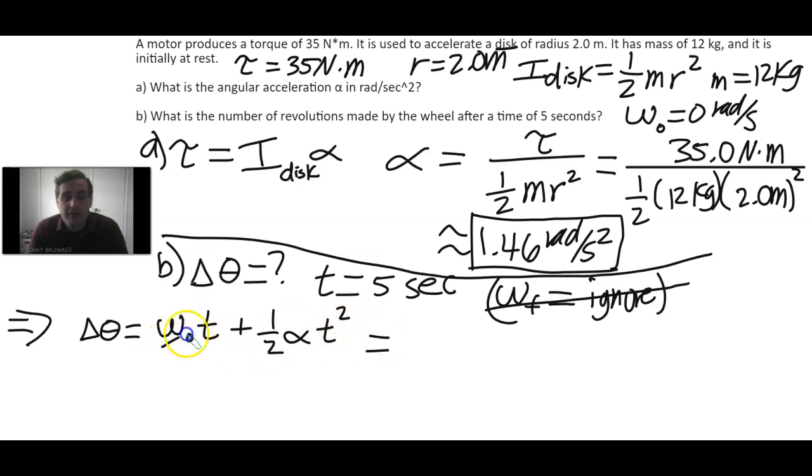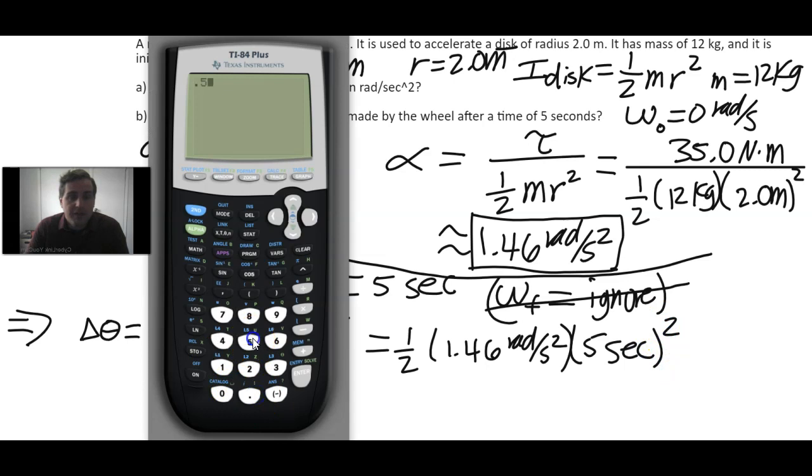Since the initial angular velocity was zero, this entire term is zero. So it's just ½ times α, which is 1.46 radians per second squared, times the time of 5 seconds squared. So 0.5 times 1.46 times 5 squared gives us 18.25. Let's go with three significant digits, so 18.3 radians.